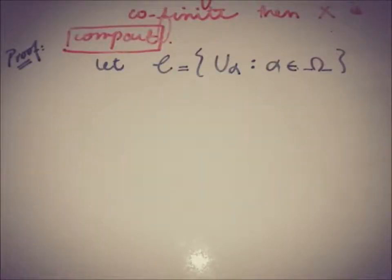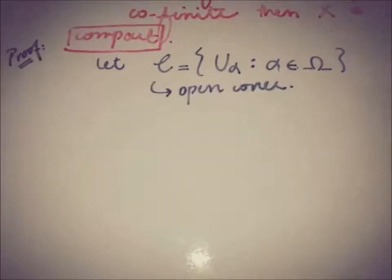Let's say there is a collection of subsets of X being an open cover for that set X. So our assumption is that we have an open cover for the infinite set X.